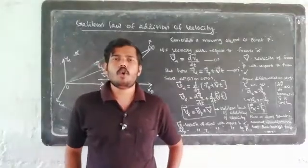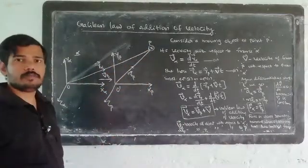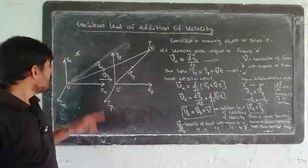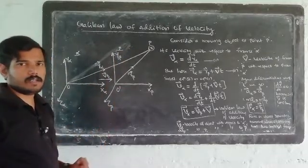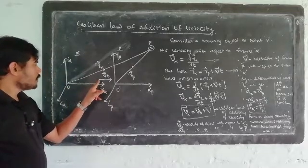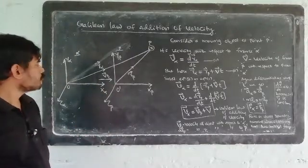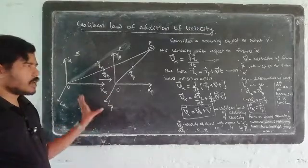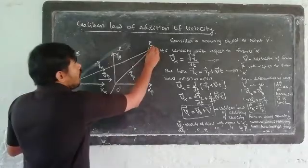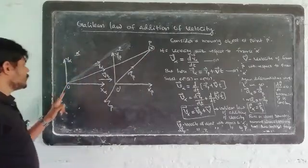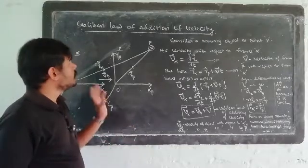This is the topic of the Galilean law of addition of velocity. We consider a moving object observed from two frames alpha and beta. Alpha and beta are inertial frames, with beta moving at uniform velocity vector V along the positive x-axis relative to alpha. We apply the Galilean transformation, and both frames satisfy the required conditions.